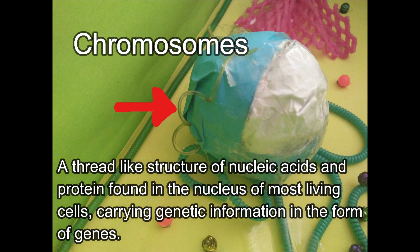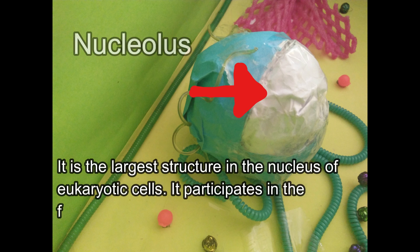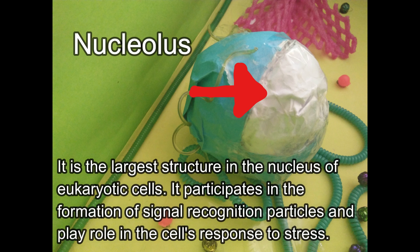Chromosomes: a thread-like structure of nucleic acid and protein found in the nucleus of most living cells, carrying genetic information in the form of genes. Nucleolus: it is the largest structure in the nucleus of eukaryotic cells. It participates in the formation of signal recognition particles and plays a role in the cell's response to stress.